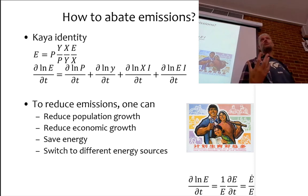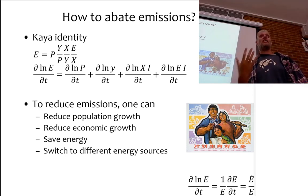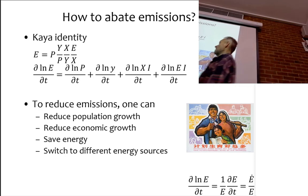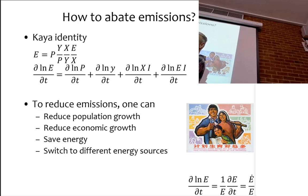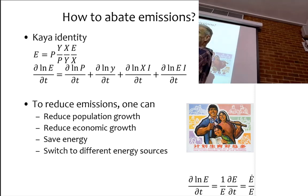That immediately tells you that you have four basic options to reduce emissions. Reducing emissions means the growth rate of emissions becomes negative, and you can achieve that in four basic ways: you can cut the number of people, you can cut their income, you can improve energy efficiency or reduce the energy intensity, and you can switch fuels so that you emit less CO₂ per unit of energy.